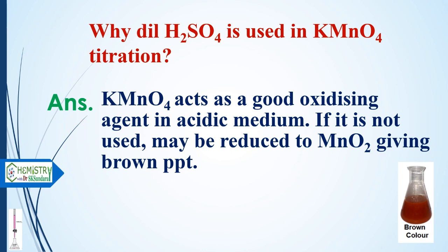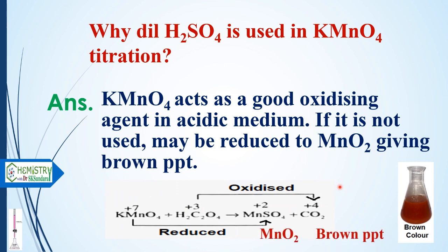Why is dilute sulfuric acid used in permanganometric titrations? KMnO4 acts as a good oxidizing agent in acidic medium. If acid is not used, the potassium permanganate may be reduced to manganese dioxide, giving a brown precipitate instead of the desired product. In acidic medium, KMnO4 is reduced to manganese sulfate (oxidation state changes from +7 to +2). Without acid, it reduces to MnO2 (oxidation state +4), which is a brown precipitate that interferes with the titration.